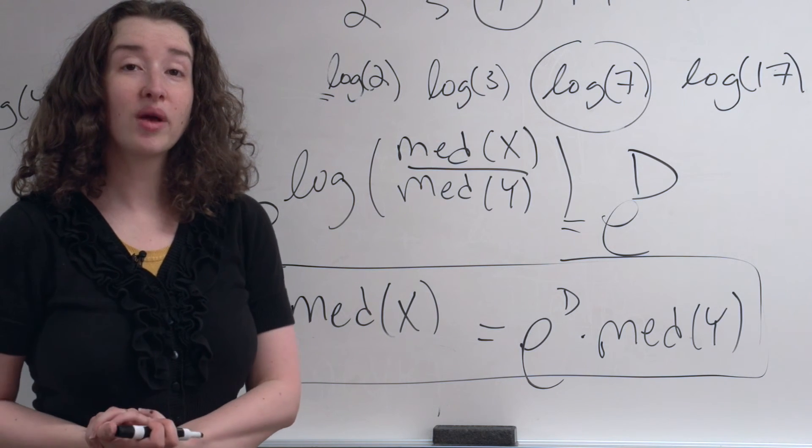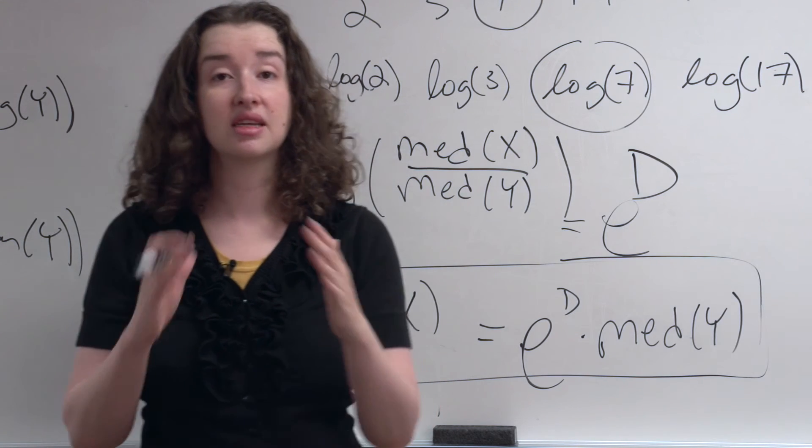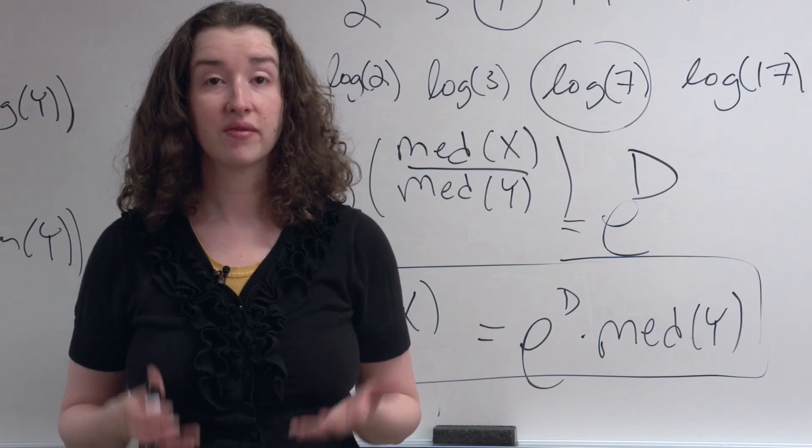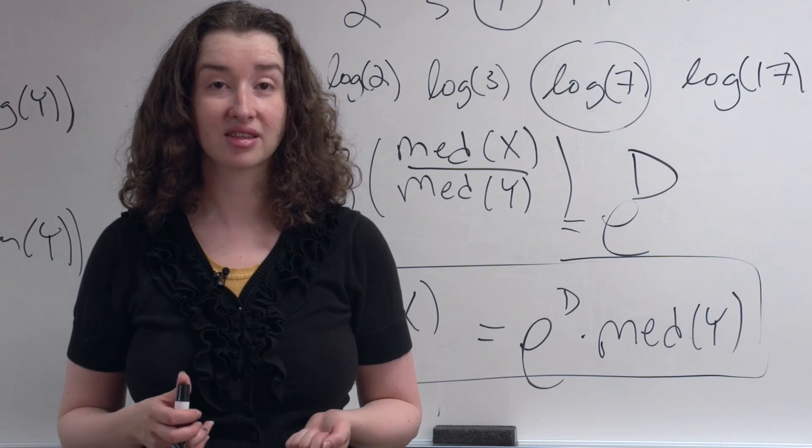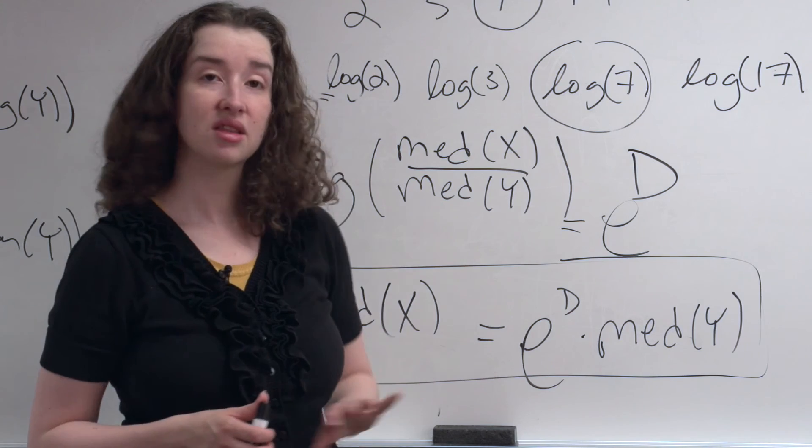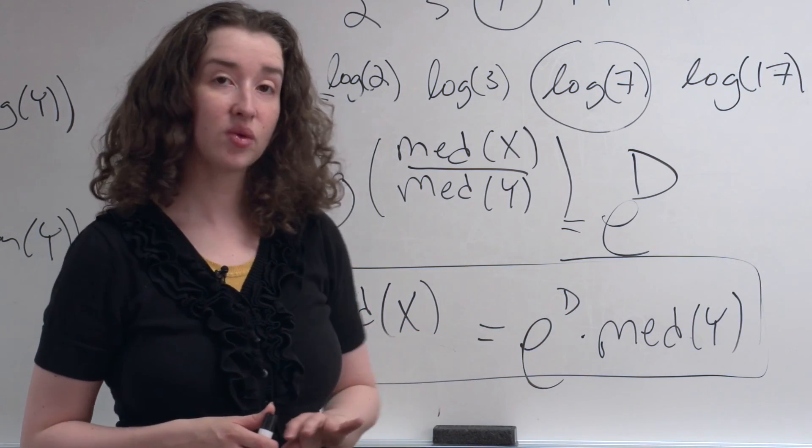Note also that when we did our t-test, we probably did not only have that estimate for the difference in means on the log scale. We probably also obtained a confidence interval for the difference in means on the log scale. Turns out, we can use the lower and upper bounds of that interval to learn about this quantity right here, this multiplier.